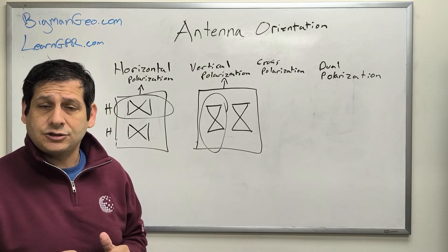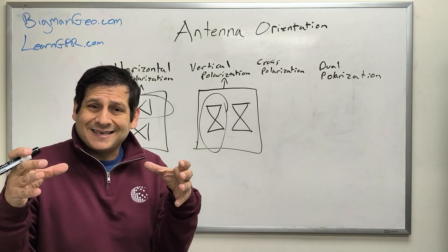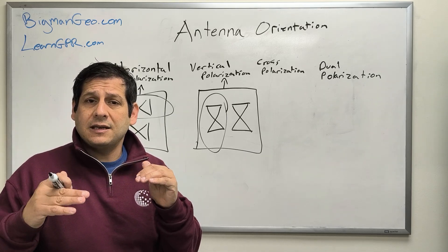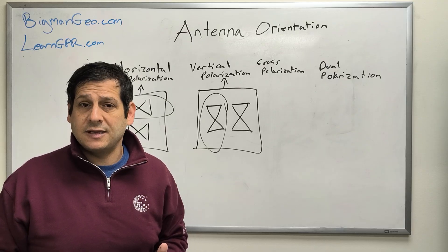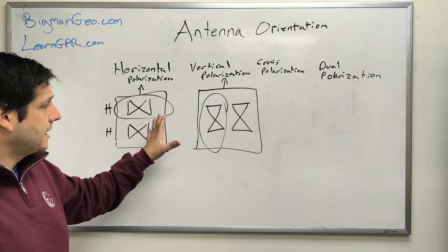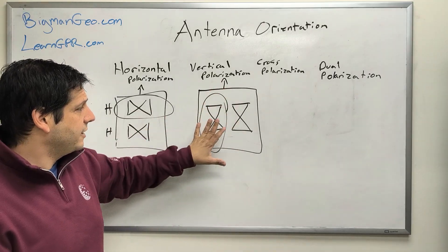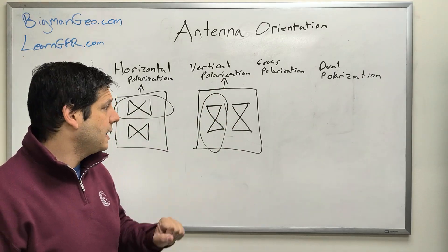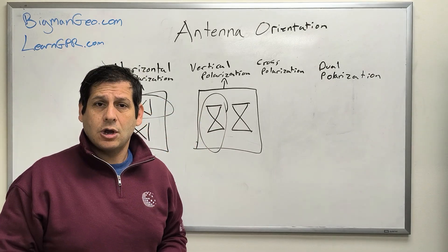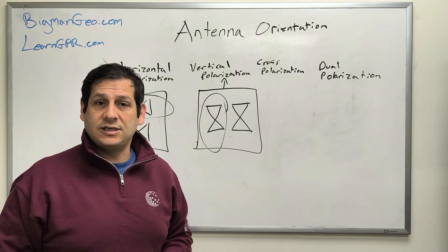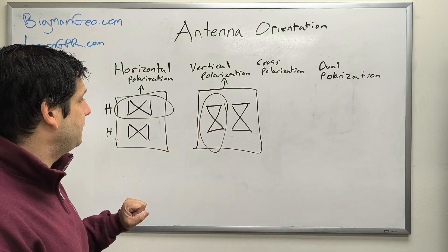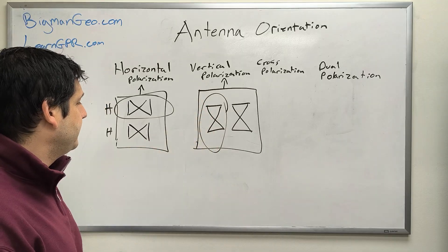Wire mesh is a real issue in concrete scanning because it's a dense layer of steel or metal that is hard to get energy through — 100% of the energy reflects off the steel. By shifting the antennas 90 degrees, it reorients the footprint of the antenna signal and allows more of the energy to penetrate between the dense wire mesh, hopefully identifying additional embedments below it. That's why this has been a big deal lately.